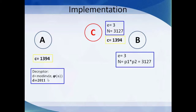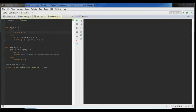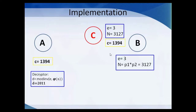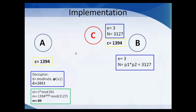We wrote a small Python code to find the mod inverse. The function mod_inverse is implemented, and with inputs e=3 and φ(n)=3016, running the code gives the mod inverse value of 2011 — the same value used in the presentation. Using this as the decryptor, we apply the formula m = C^d mod n = 1394^2011 mod 3127, and we get the message 'HI' or 89.